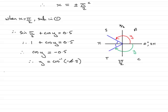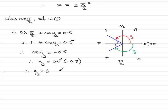Getting on a calculator, when you do inverse cos of negative 0.5, you get 2 pi over 3. So that's the red value — y equals 2 pi upon 3. And by symmetry, the green value must be minus 2 pi upon 3. So y equals plus or minus 2 pi upon 3.